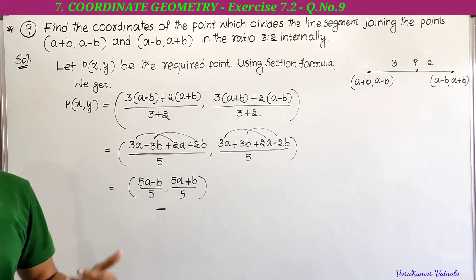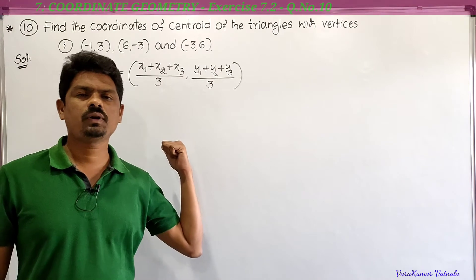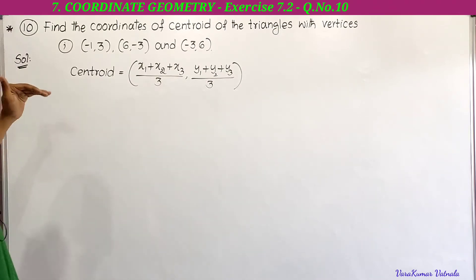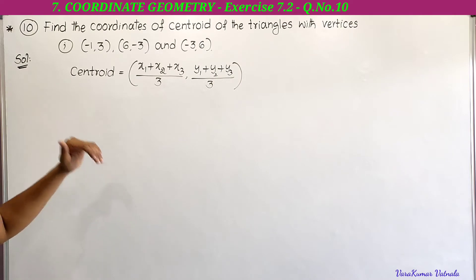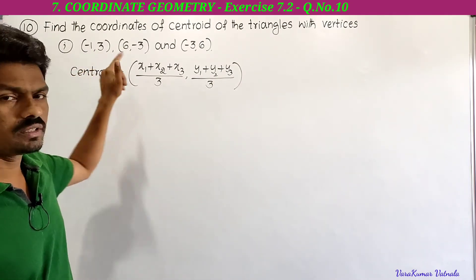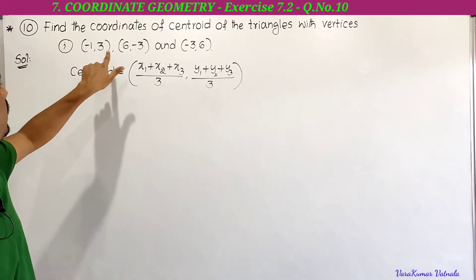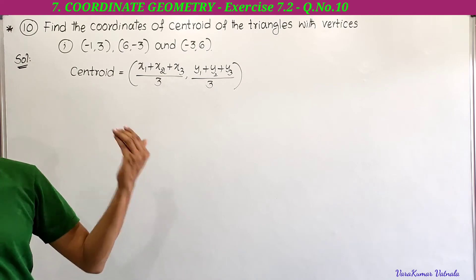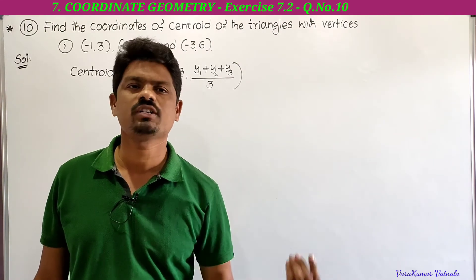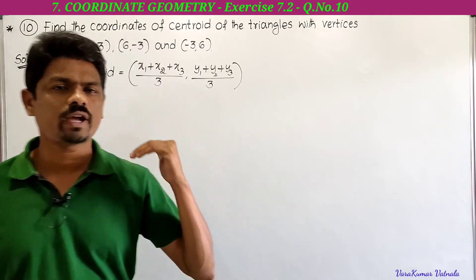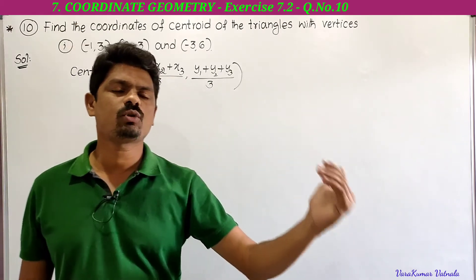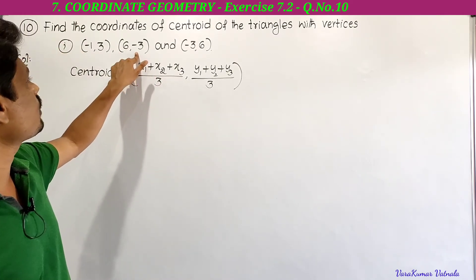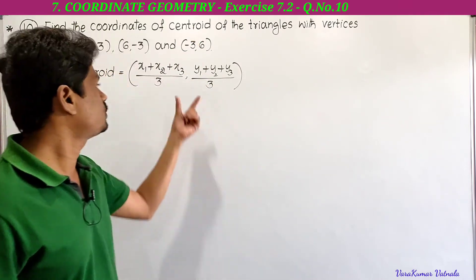That completes the ninth problem. Next we solve the tenth problem in Exercise 7.2. It asks us to find the coordinates of the centroid of triangles with given vertices. This is the first part: vertices are (-1, 3), (6, -3), and (-3, 6). The centroid formula is: ((x1+x2+x3)/3, (y1+y2+y3)/3).